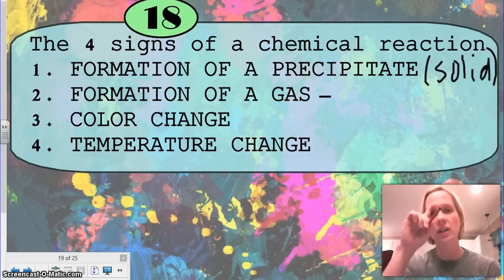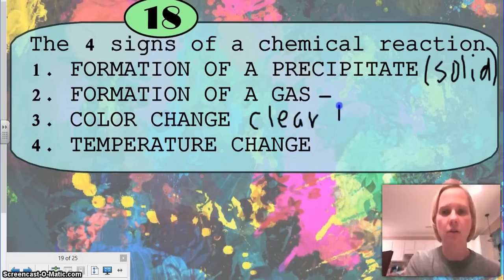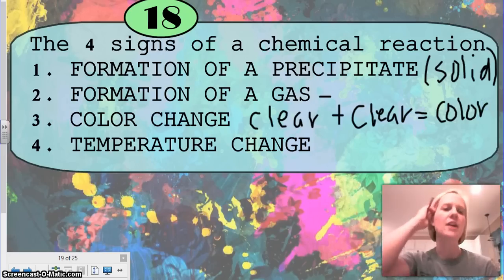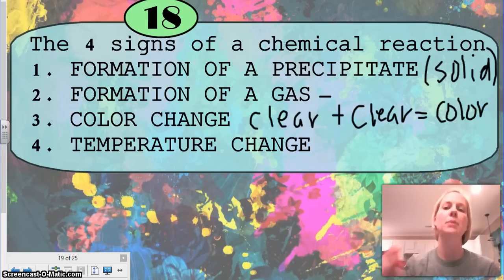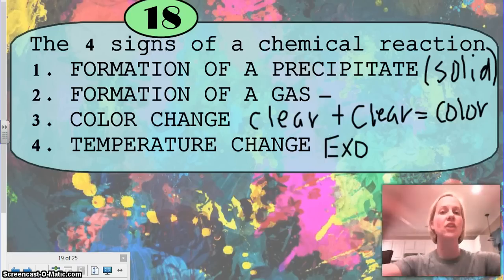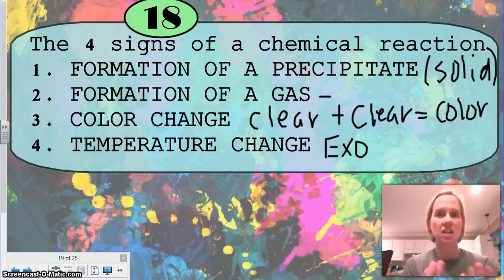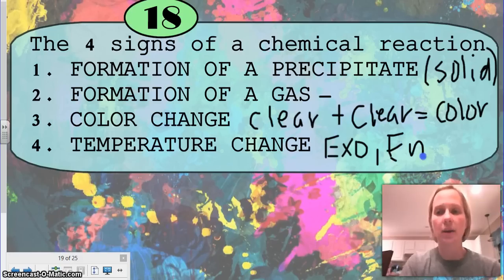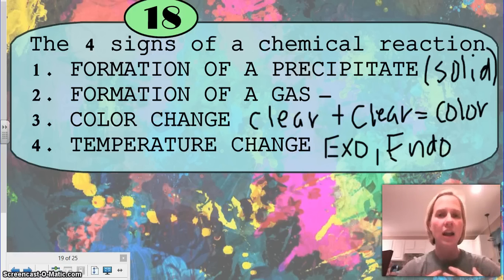Color change is going to be, I have two clear liquids. So, I have a clear liquid plus a clear liquid, and it gave me a color. That's a color change. And the final one is temperature change. Temperature change, we're thinking exothermic, which is that heat is being given off. So, your baggie that you had in class got hot. Endothermic is when energy is being absorbed, and it's actually getting colder. That was the other baggie that was getting colder as you touched it.